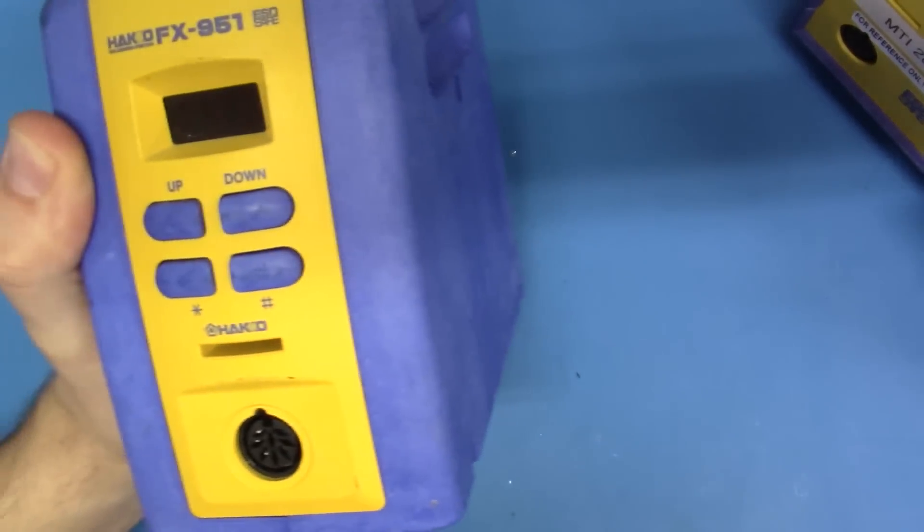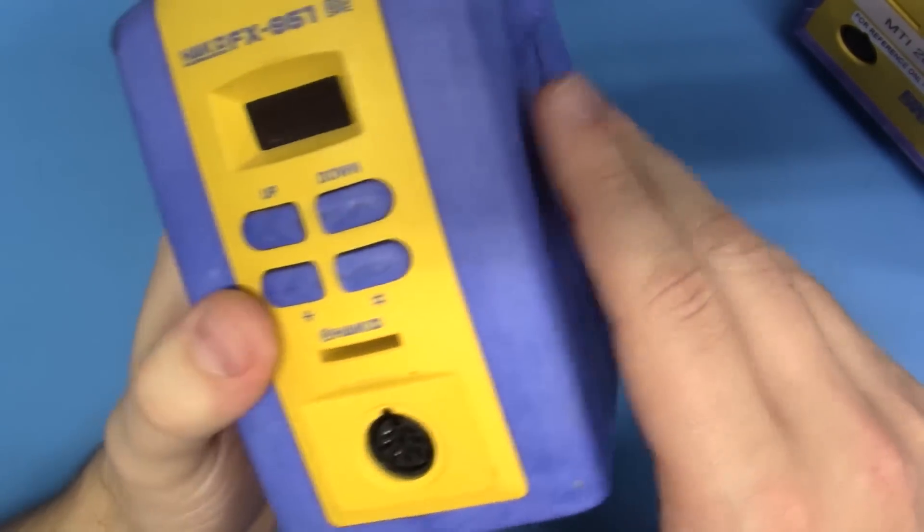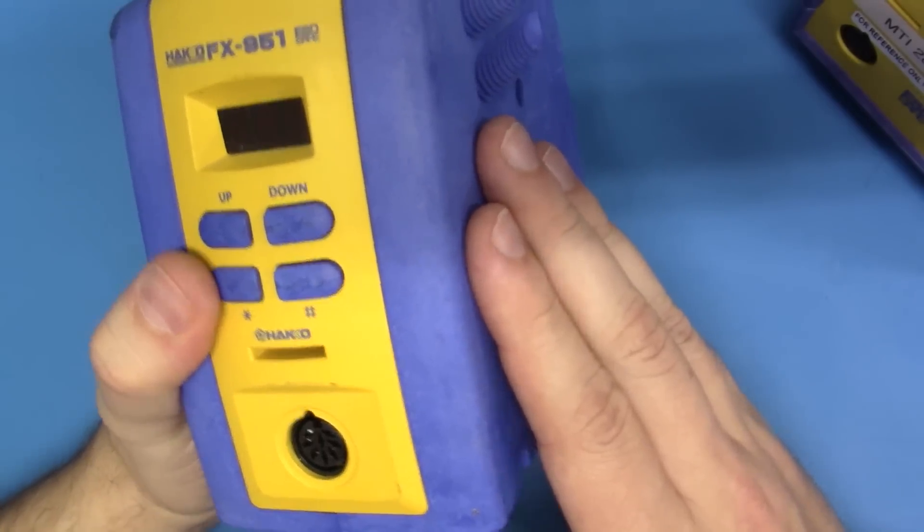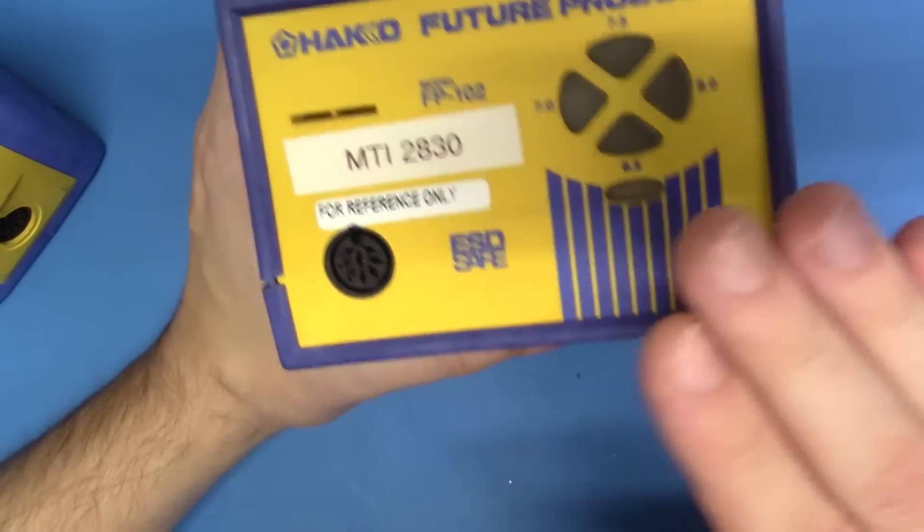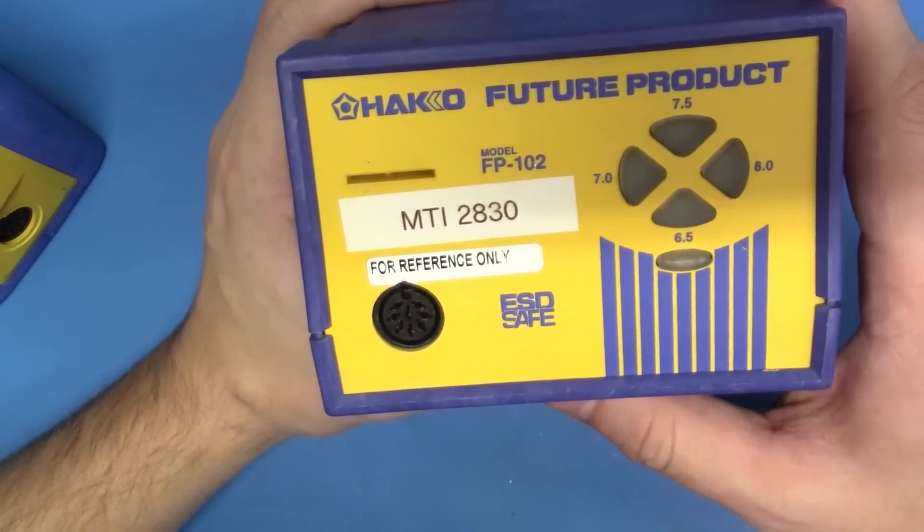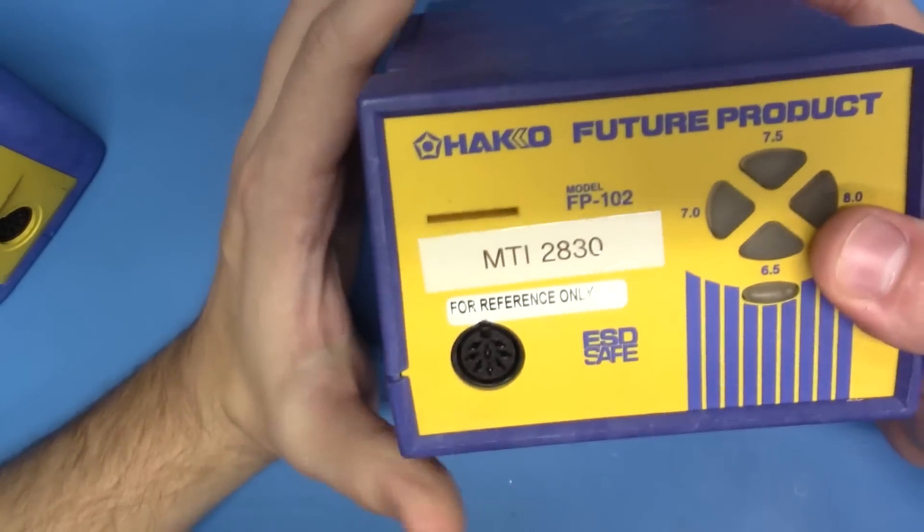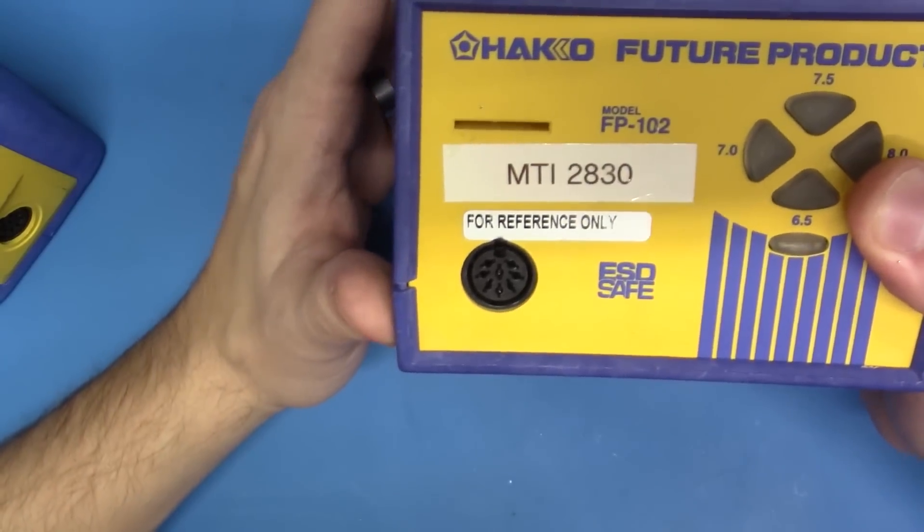Go on eBay and find a used FX951 like this one for a couple hundred bucks, or get an FP102 station for 150 bucks or less. But buying used isn't always the best idea. You never really know what you're getting.